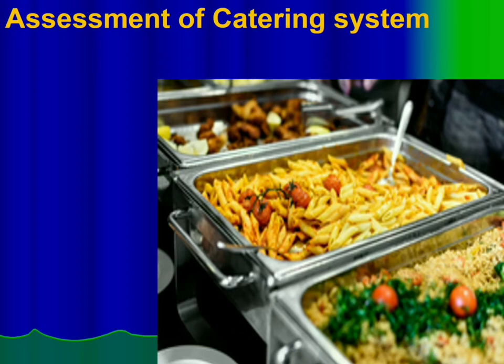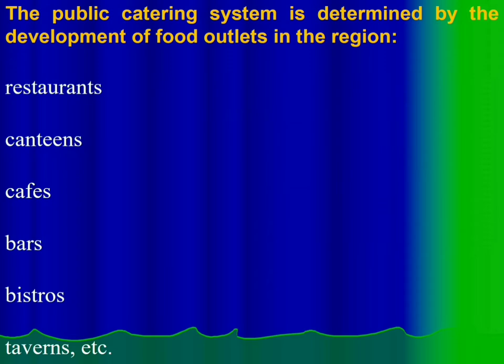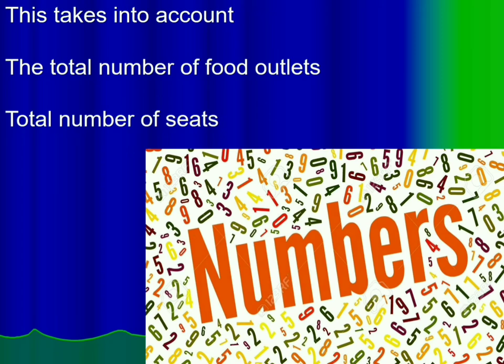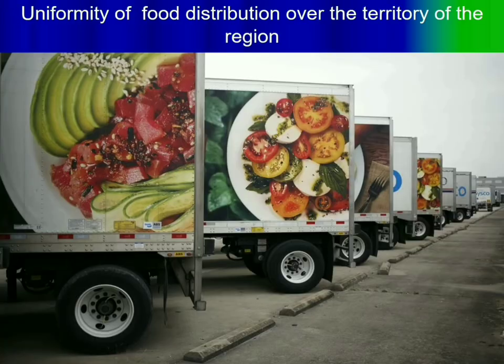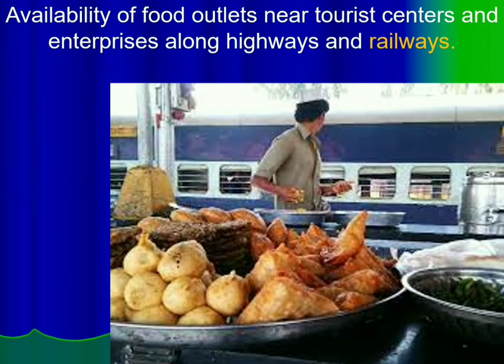Let's move to assessing the catering system and food infrastructure of a tourism area. When we speak about the public catering system, we can define the following types: restaurants, canteens, cafes, bars, and other types of the food industry. While assessing the territory, they take into consideration the total number of food outlets and the number of seats. Uniformity of food distribution over the territory of the region is very important, as is the availability of food outlets near the tourist center.